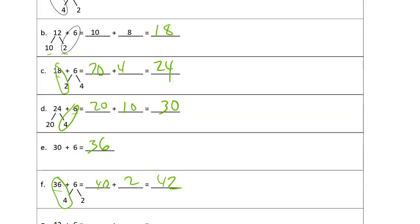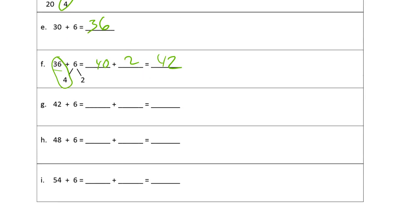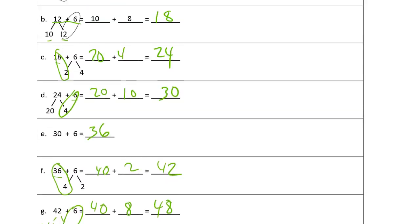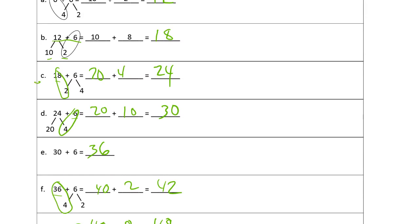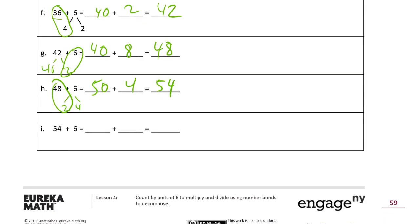Now we're back to the same pattern we had with twelve — a ten with a two. So we have forty plus eight, which is forty-eight. Then forty-eight plus six: we only need two more for forty-eight to become fifty, so that's fifty plus four, which is fifty-four. And then fifty-four plus six: four plus six is ten, so fifty plus ten equals sixty.